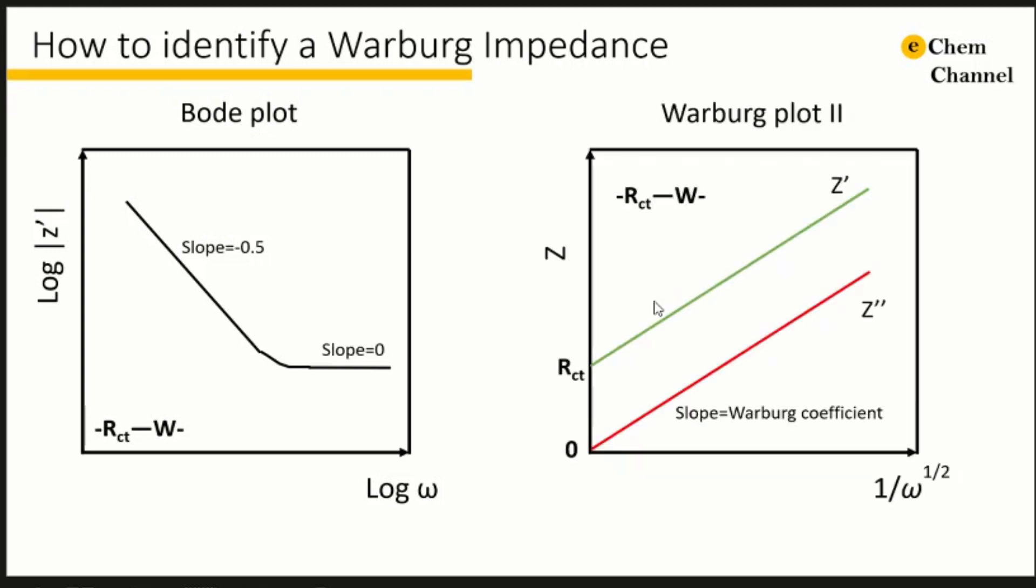Another way is to plot both real and imaginary part of Z, the Z prime and Z double prime, as a function of 1 over omega to the power of 0.5. The lines should be straight and parallel. The slope of both lines should be equal to the Warburg constant.